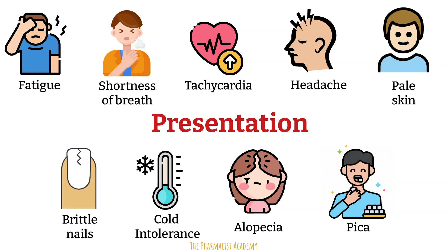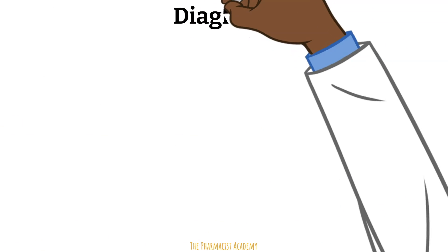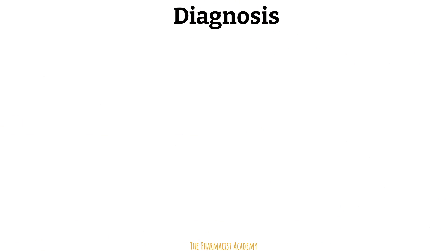Lastly is pica, which is an eating disorder in which a person eats things not usually considered food — so ice, sand, coffee grounds, ashes, hair, etc. The reason for this is unclear. If a patient presents with these signs and symptoms, we may think anemia, but in order to make the accurate diagnosis, we need laboratory-confirmed evidence of anemia as well as evidence of low iron stores.